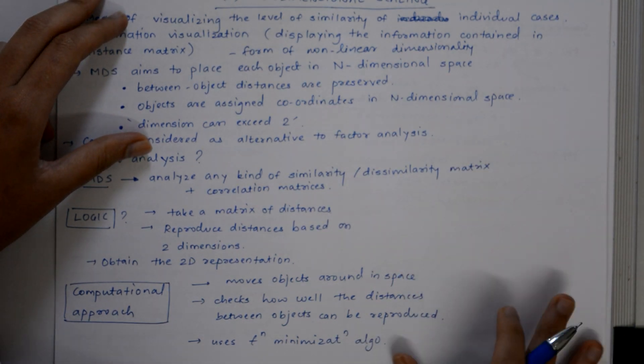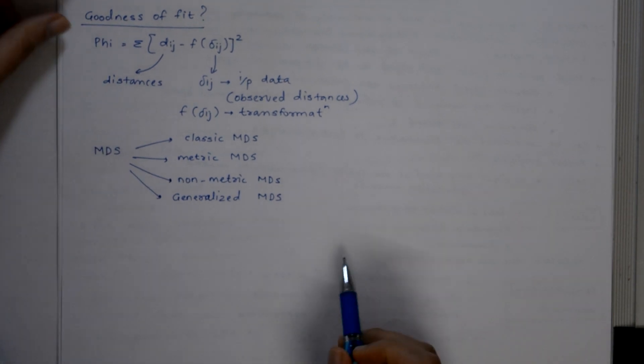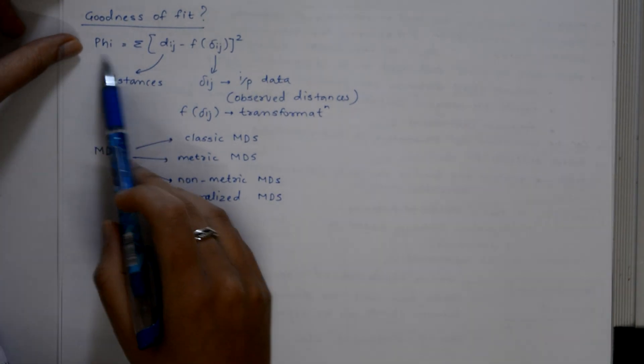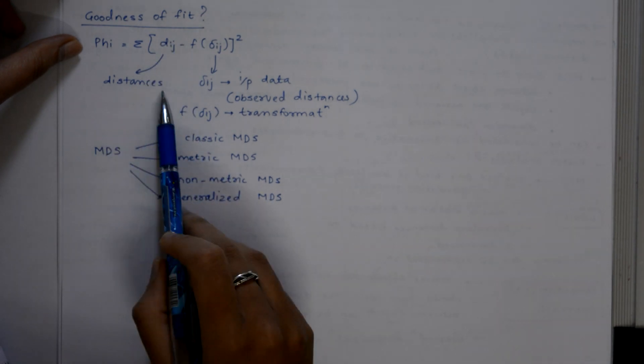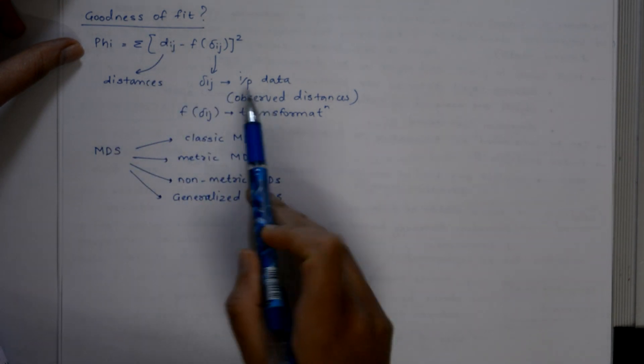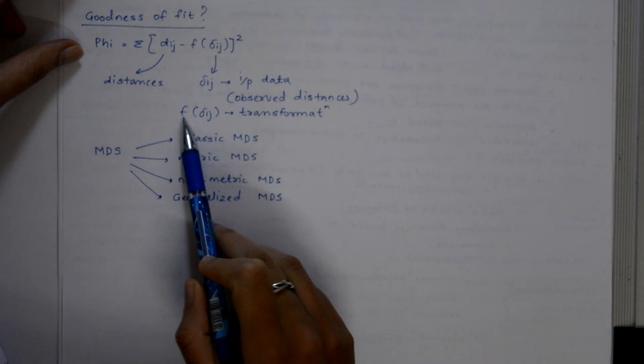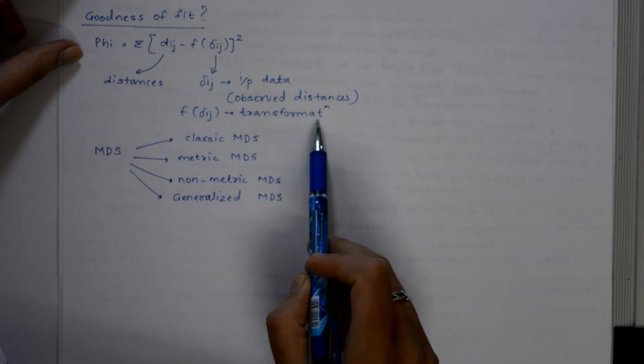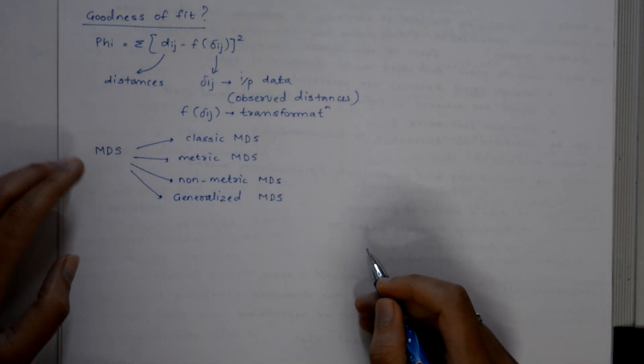What is goodness of fit? Goodness of fit is given by this equation where dij is the distances and delta of ij is the input data (the observed distances), whereas f of delta is the transformation, that is the mathematical function.